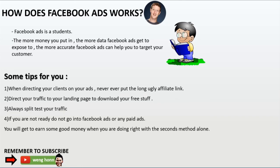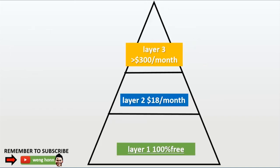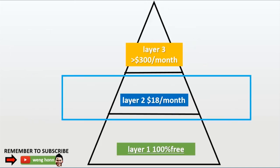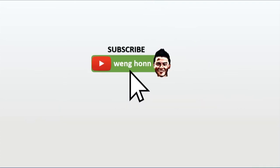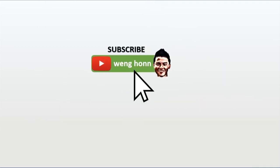You will get to earn good money when you are doing things right with the second method alone. So in short, if you are a beginner, I highly recommend you start your affiliate marketing business with the second method: set up your own website and use email marketing. That's it for now — remember to subscribe to my YouTube channel, thanks for your support, and I will see you in the next video.